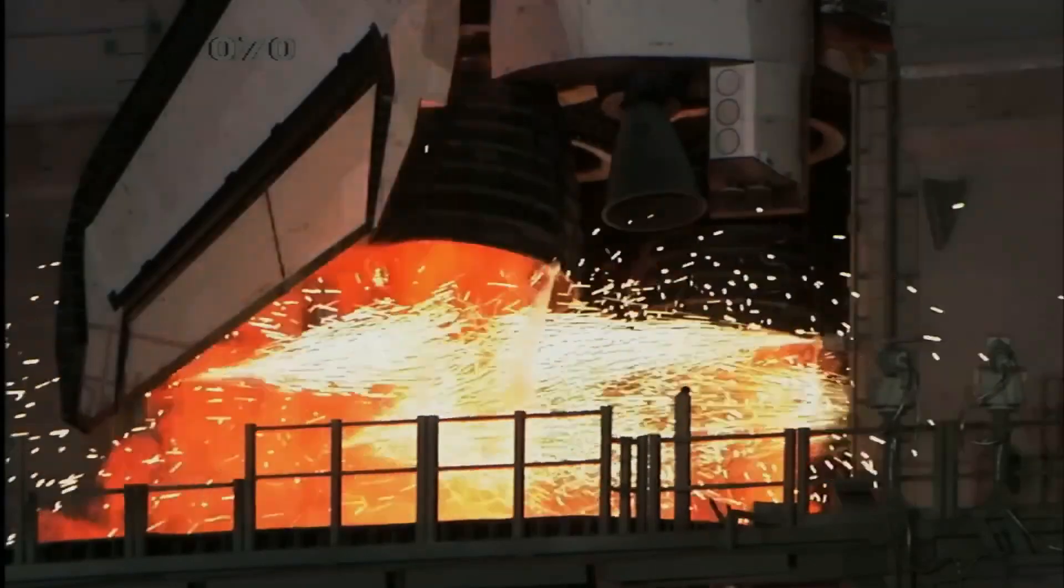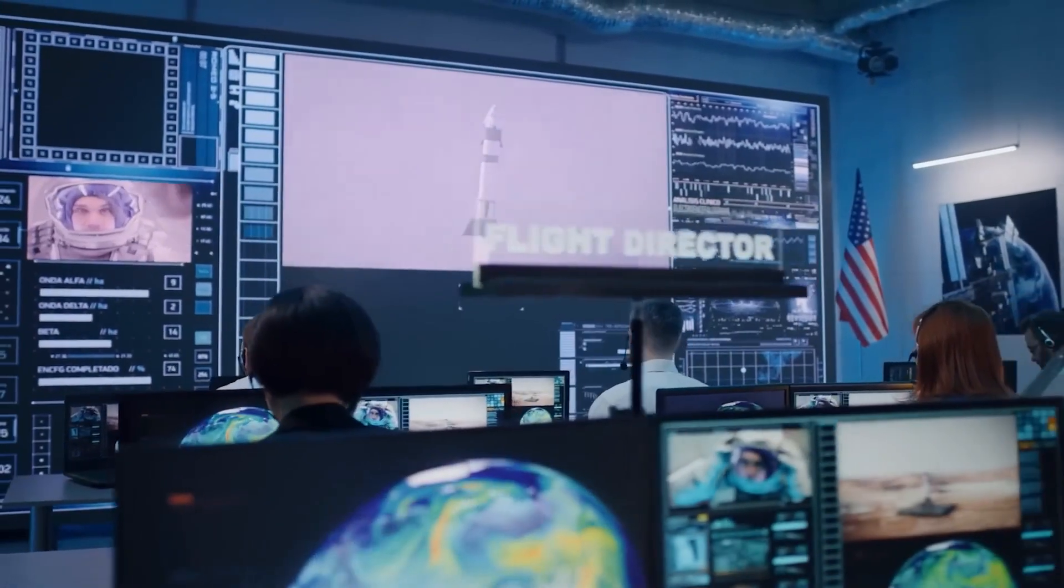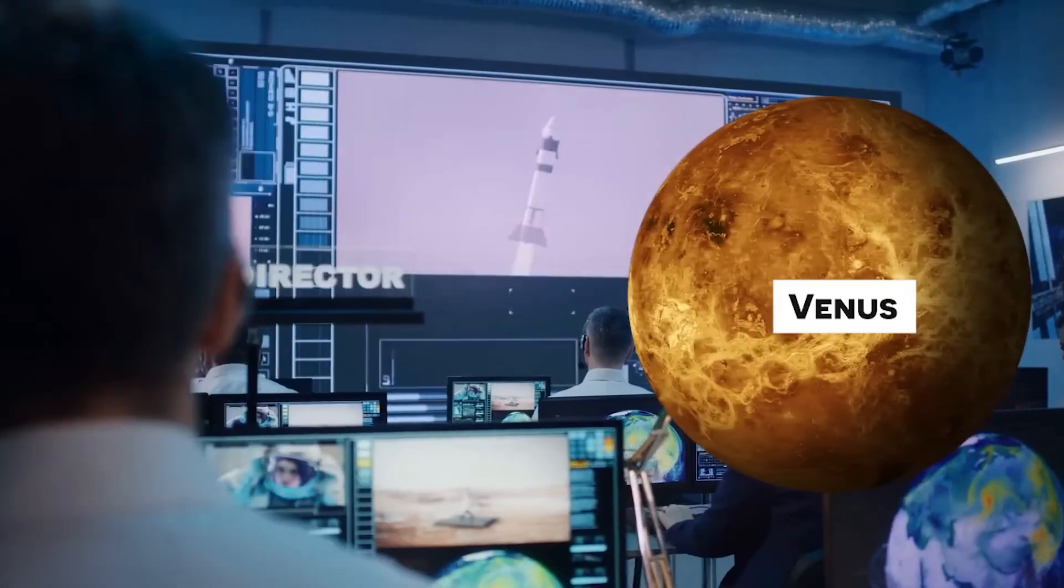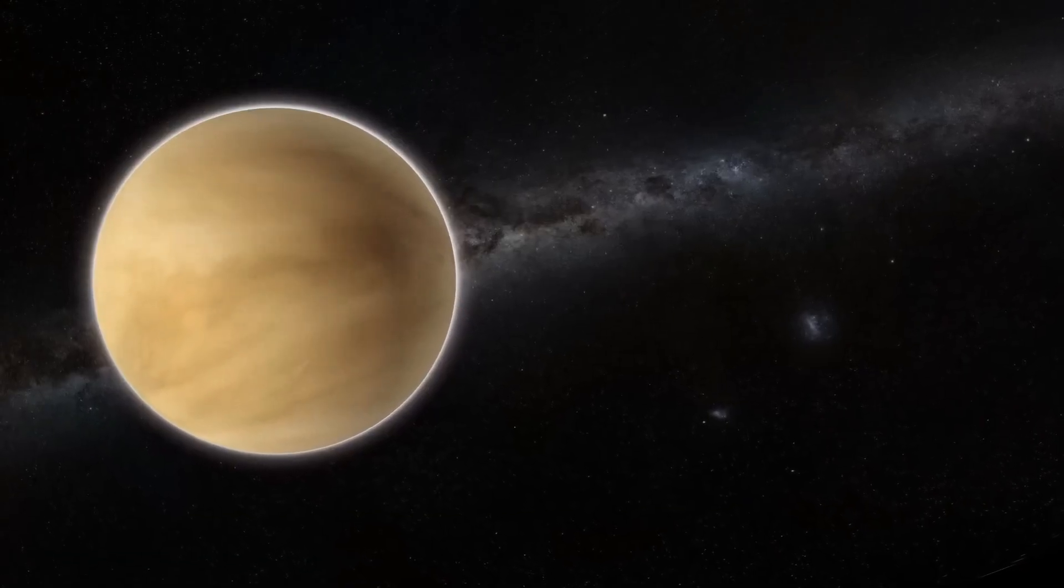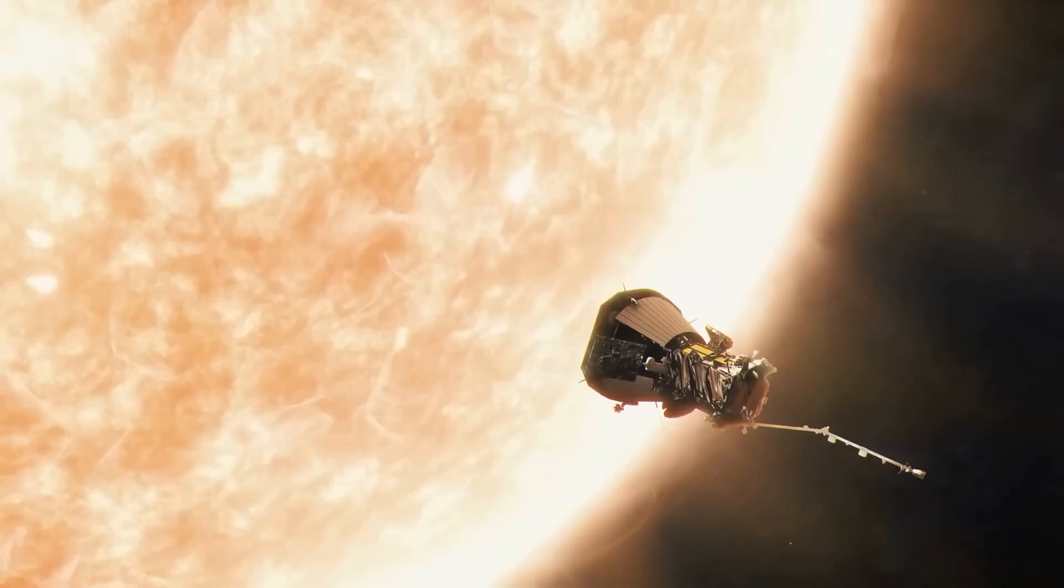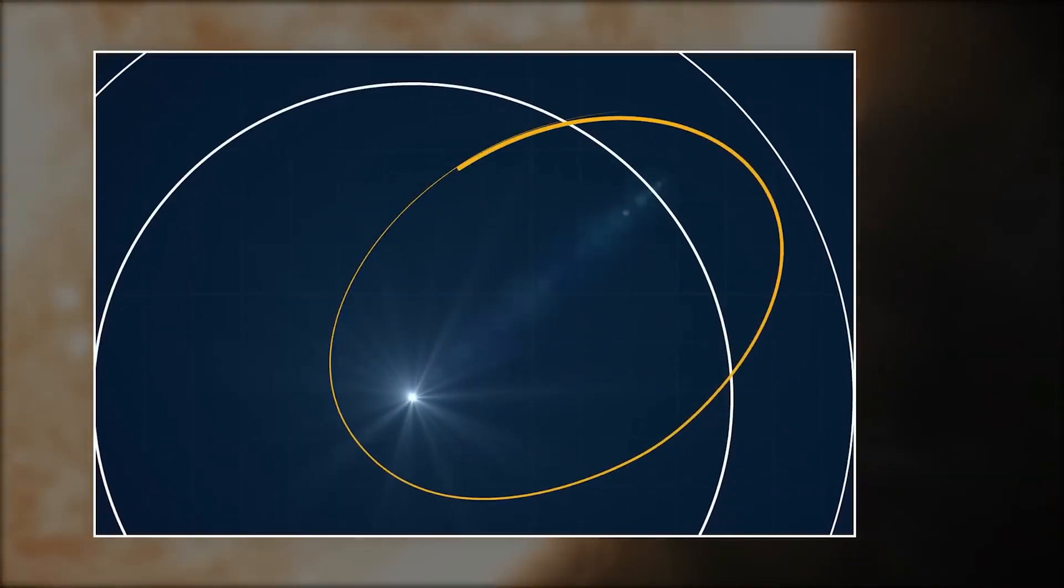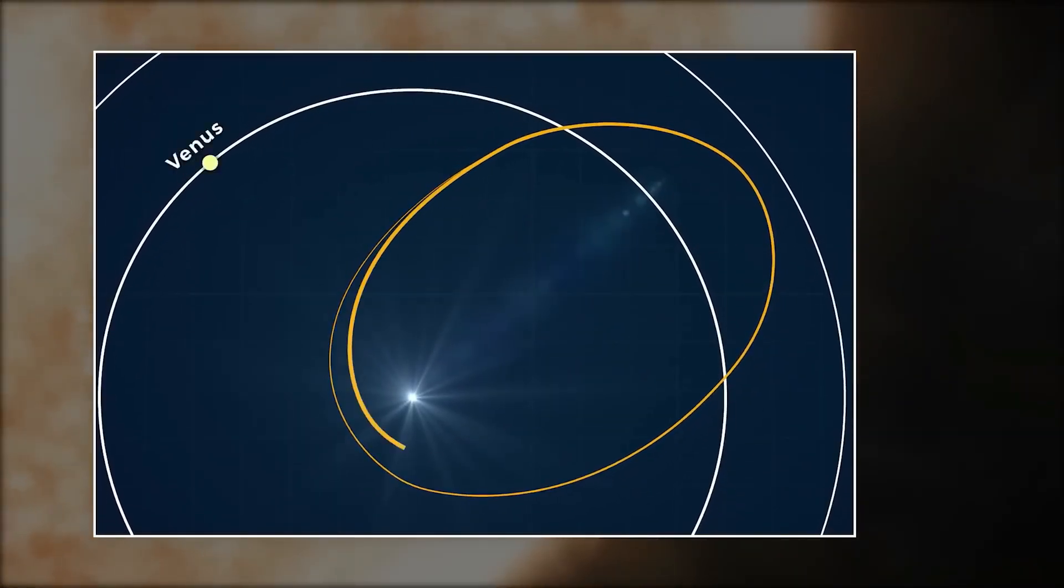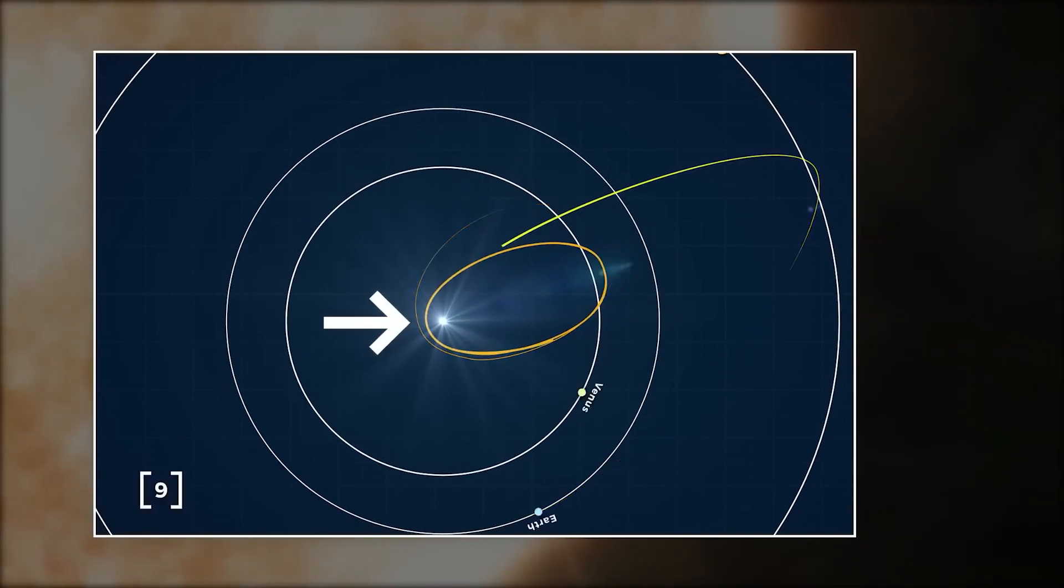Sending a spacecraft to the Sun required even more energy, and a rocket with such power hasn't been developed yet. Therefore, NASA's experts decided to send the Parker Solar Probe to Venus first. Venus, being the second planet in our solar system, could provide the gravitational assist needed to increase the probe's speed. However, there was a catch. Venus is a smaller planet, and thus its gravitational pull is weaker. To achieve the required speed for the Parker Solar Probe to reach the Sun, it had to perform 24 orbits around Venus. Only then will it be able to reach the closest point to the Sun.